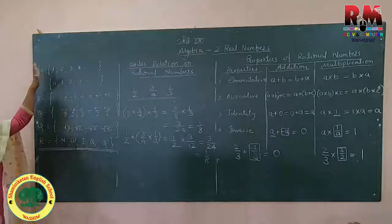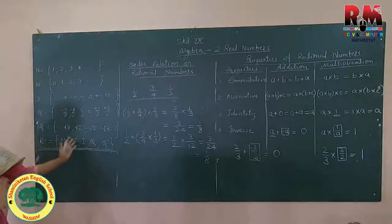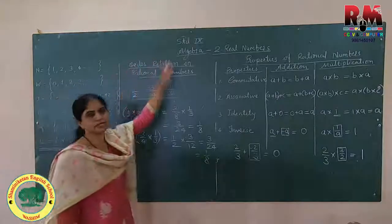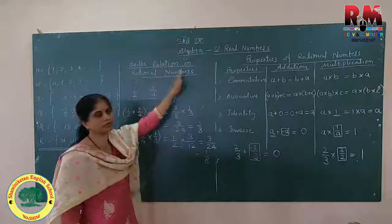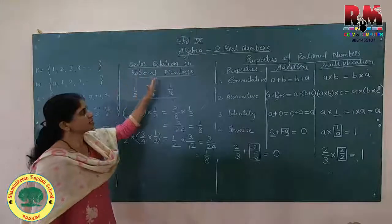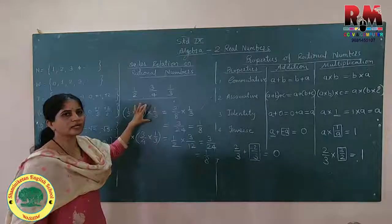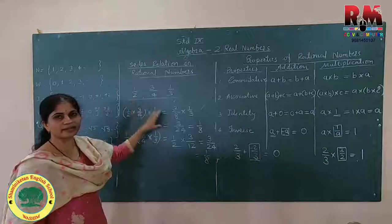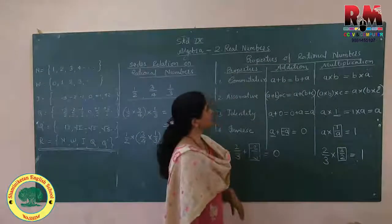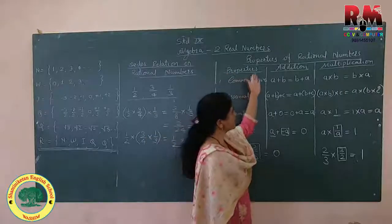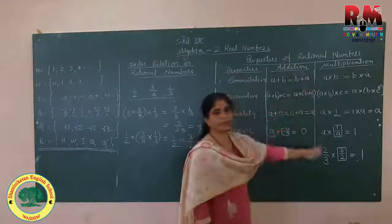In this lesson we covered: what real numbers are (all numbers from all sets), order relation on rational numbers (equal, less than, greater than using cross multiplication), and properties of rational numbers — commutative, associative, identity, and inverse — all studied over both addition and multiplication.